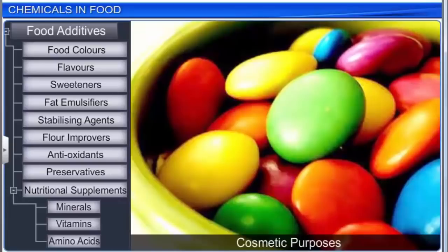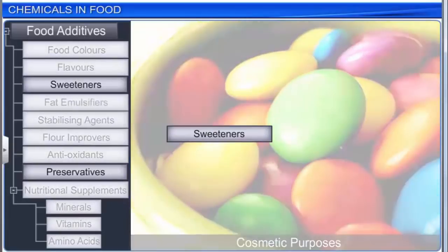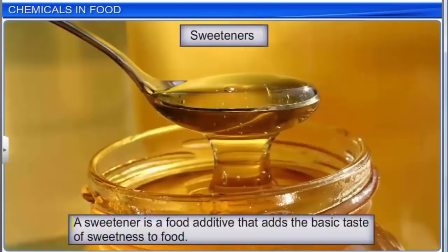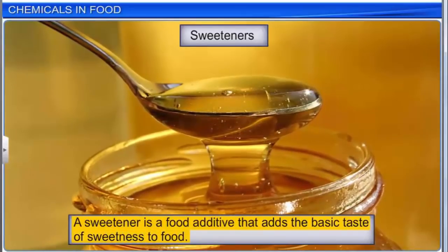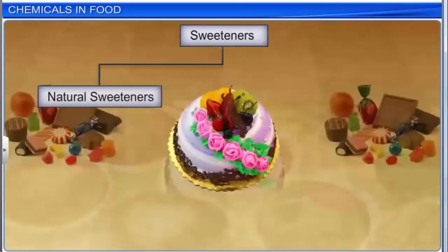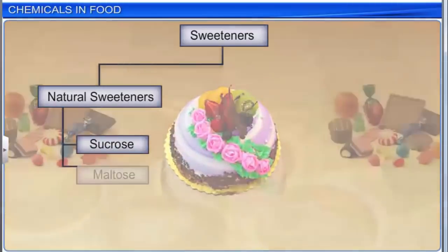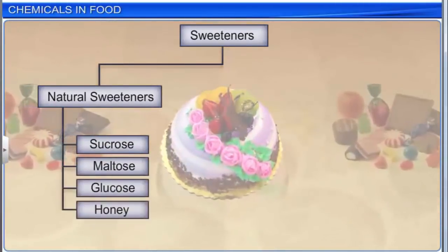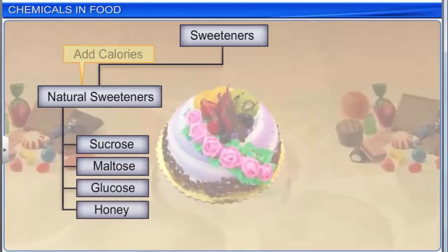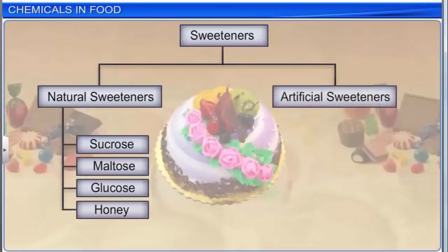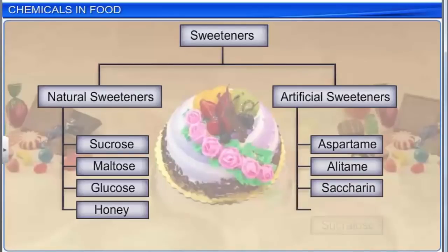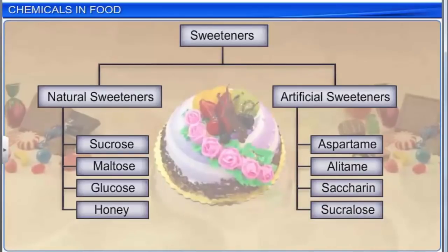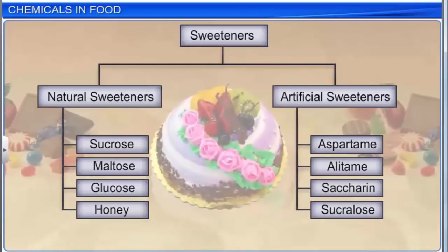Let us take a look at the use of sweeteners and food preservatives. A sweetener is a food additive that adds the basic taste of sweetness to food. Natural sweeteners like sucrose, maltose, glucose, and honey add calories when consumed. On the other hand, artificial sweeteners like aspartame, alitame, saccharine, and sucralose are basically non-nutritive sugar substitutes that provide no calories when consumed. Hence, they are popular among diabetic and diet-conscious people.